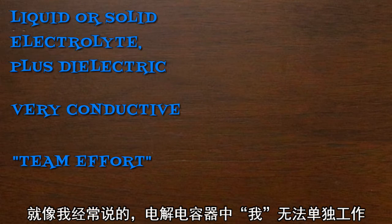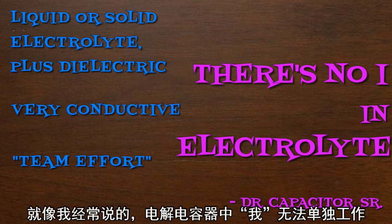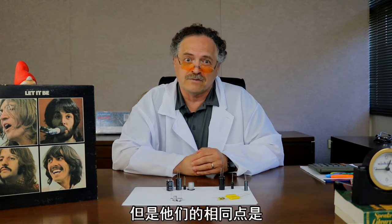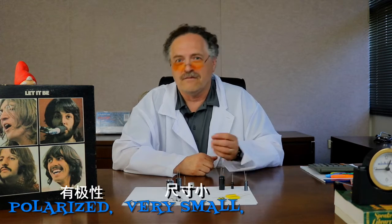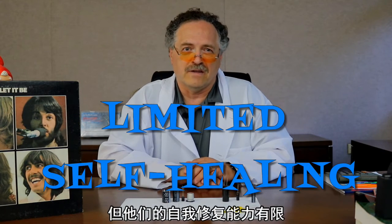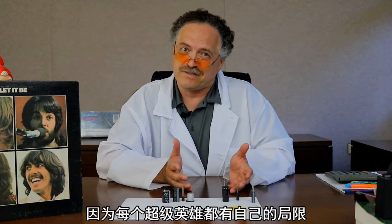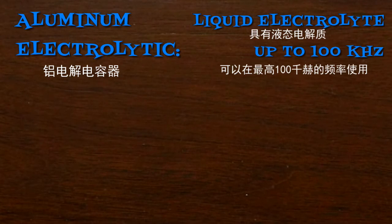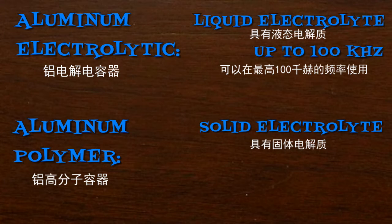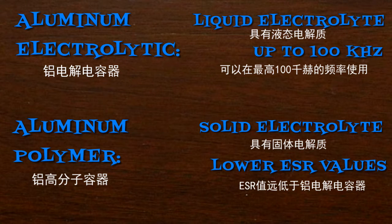As my papa always said, there's no "I" in electrolyte. No two electrolytic capacitors are alike, especially if they contain different electrolytes. But you can always count on electrolytic caps to be polarized, very small, and inexpensive. They also have limited self-healing. Aluminum electrolytic capacitors have a liquid electrolyte and can be used up to 100 kilohertz, while aluminum polymer capacitors have a solid electrolyte and ESR values much lower than electrolytic capacitors.